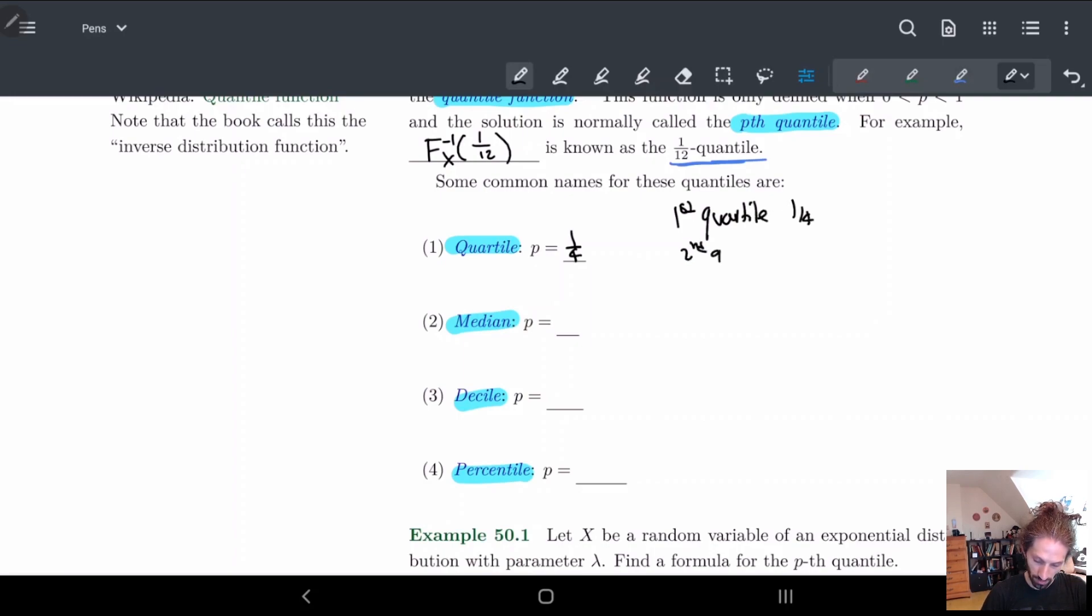Basically the idea is that if I have some function, the first quartile is basically this area - the underneath part is one-fourth. The three-fourths is all of this, etc. Median is basically the same thing except we have half.